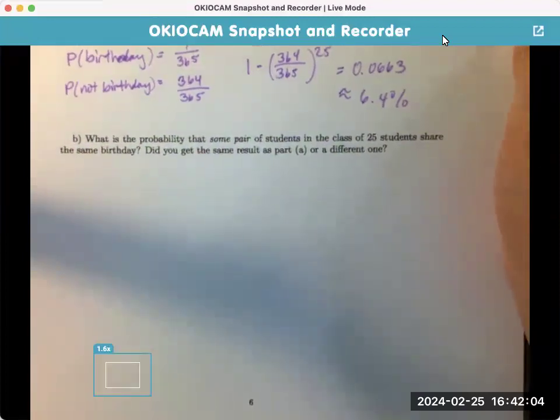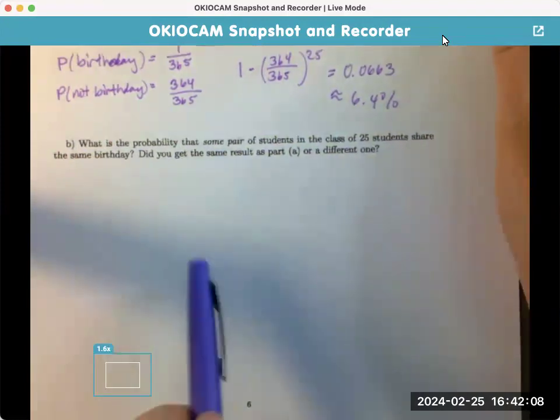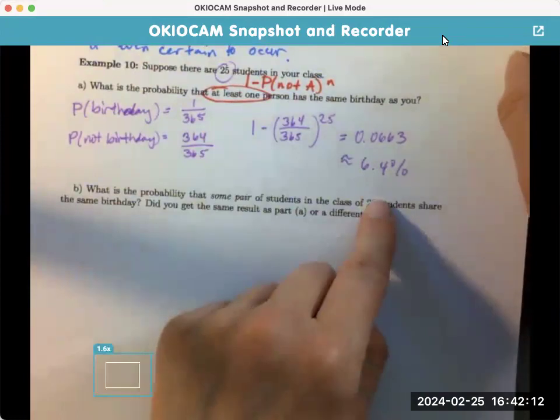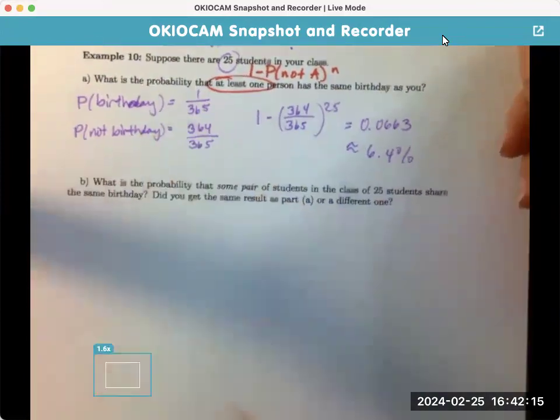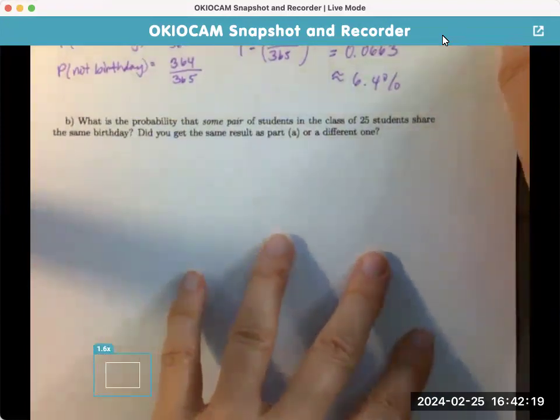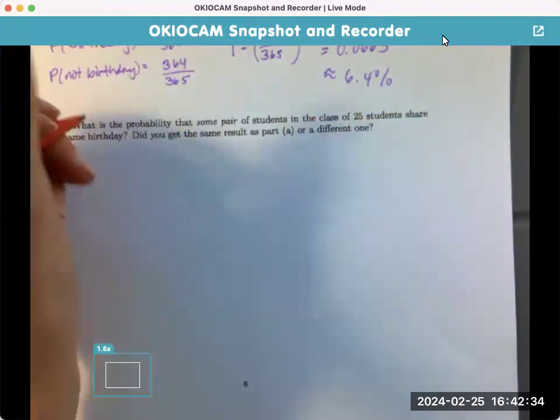What's the probability that some pair of students in the class and students share the same birthday? Oh, yes. This is what I was thinking. So, having the same birthday as you, you know, that's pretty specific. But, just any pair in general, okay, how's it changed? Did the results as part A, are they different or the same? So, how do they change? So, let's see. Again, we're still going to do at least one pair, okay? So, it's still considered an at least one birthday.